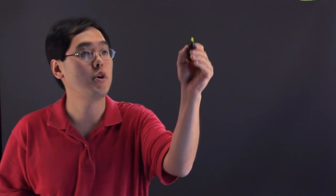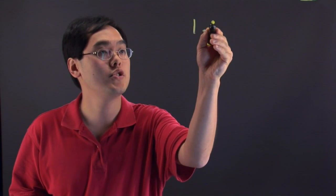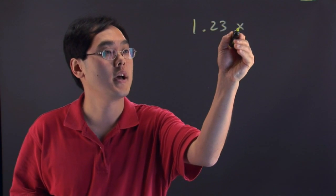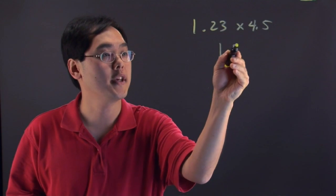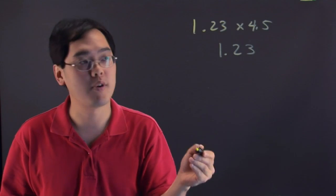There's just one little tweak that we've got to think about. Suppose I want to multiply 1.23 times 4.5. Now you set it up like you would a regular multiplication problem.